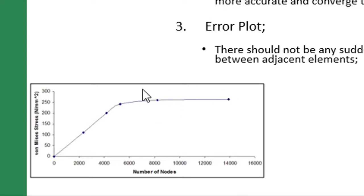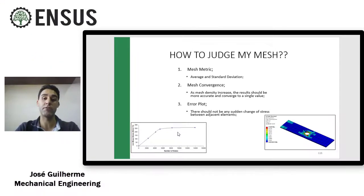Then I can understand here that my mesh is good enough and that I converged in my mesh. And the third one is the error plot.